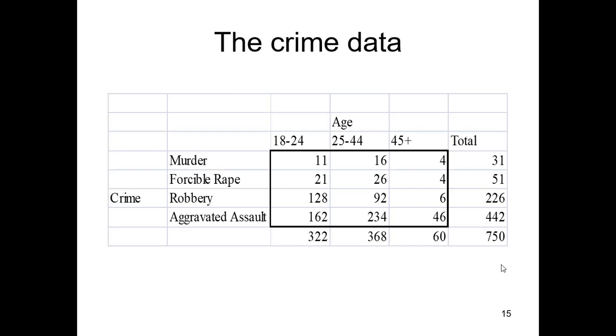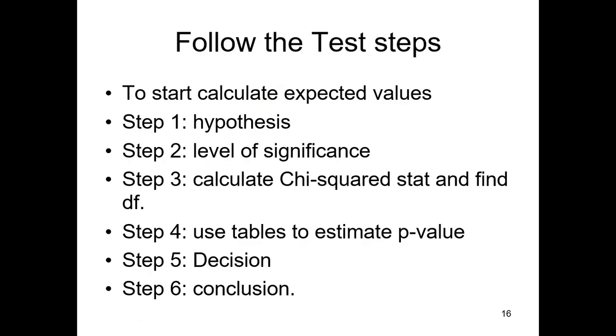So for each one of the crime, type of crime and age group, we have an observed frequency, which means we will also have to find an expected frequency for each one of those. And all that requires us to do is if I want to know the expected value for murder by 18 to 24 year olds, I just take the row total of 31, multiply by its respective column total of 322, and divide by the total total of 750. But I have to do that for every single one of those cells. That's a lot of labor if you're doing it by hand, real easy if you're doing it by Excel, which we will see shortly.